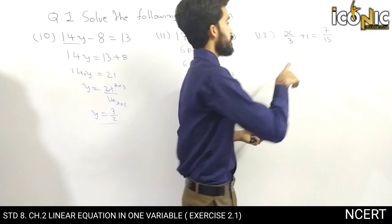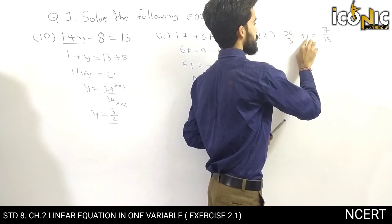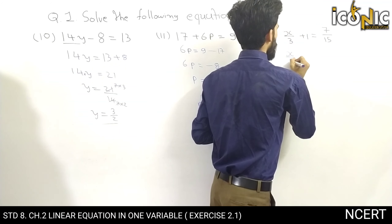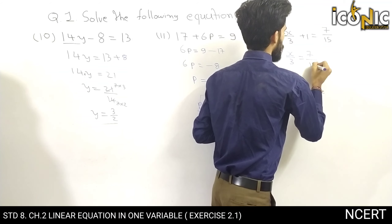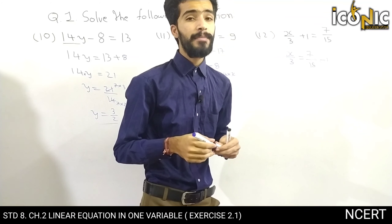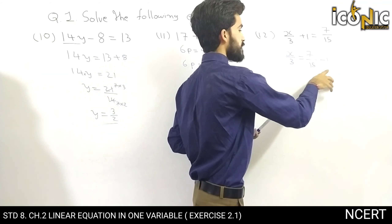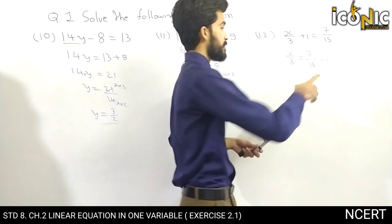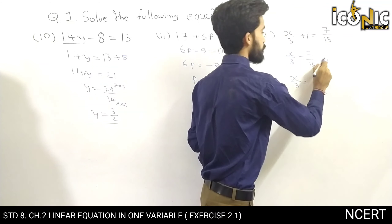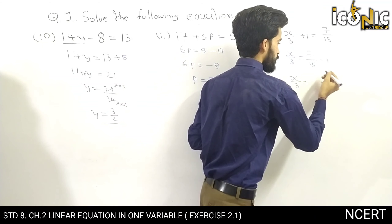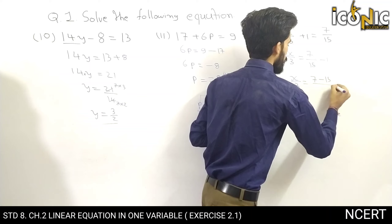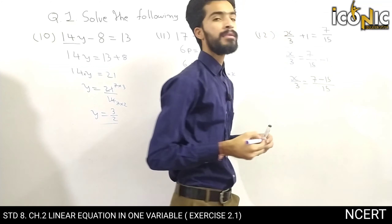In question 12, the x term is on one side. We transport it: x by 3 is equal to 7 by 15 minus 1. We need to take the LCM of 15, so we multiply 1 by 15 over 15. This gives x by 3 equal to 7 minus 15, all divided by 15.